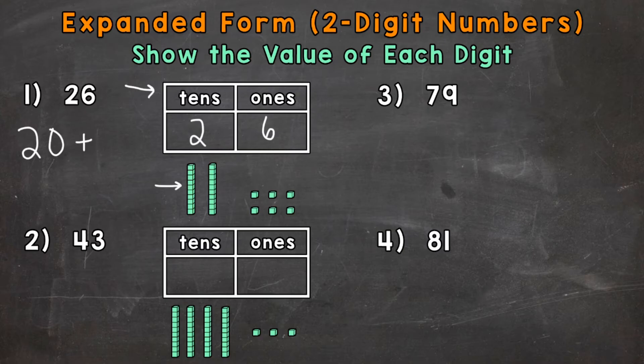Well, the 6 is in the ones place. And that's represented right here by six place value blocks. Six ones. So the value of that 6 is 6. So the expanded form would be 20 plus 6.